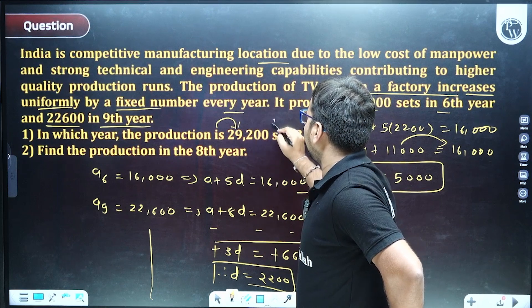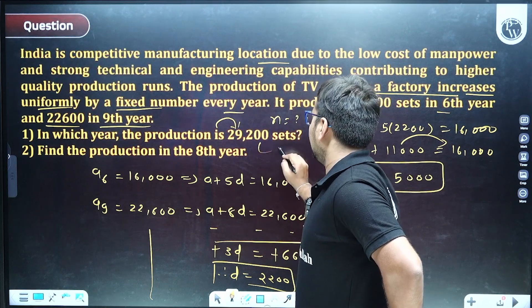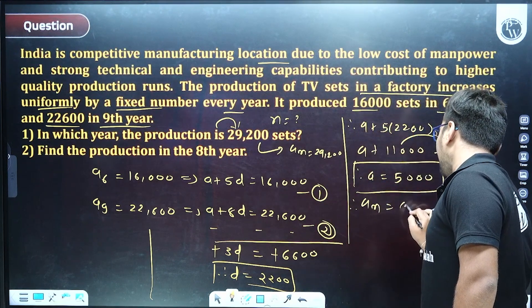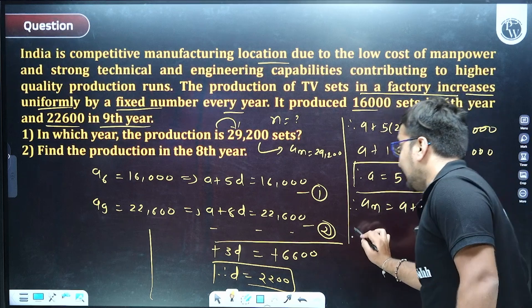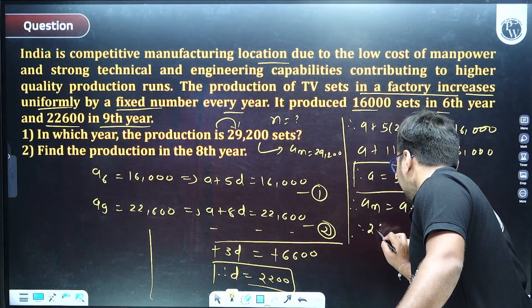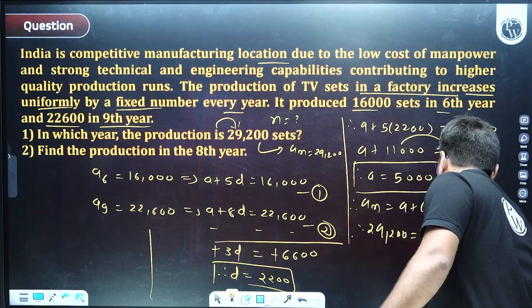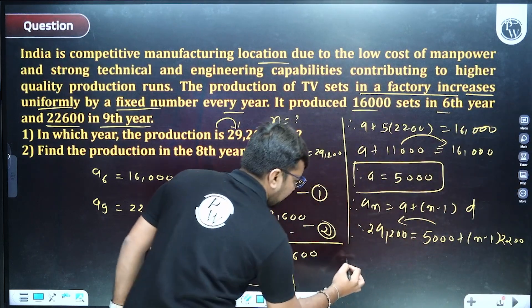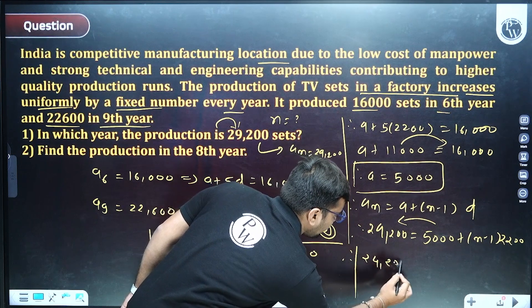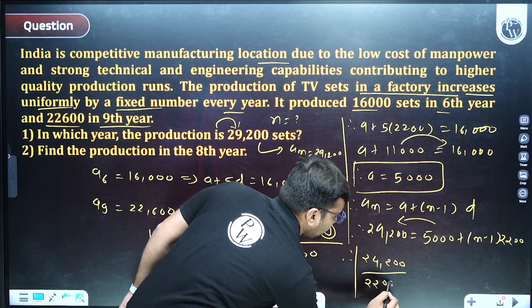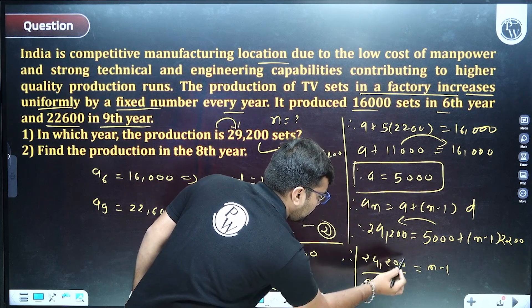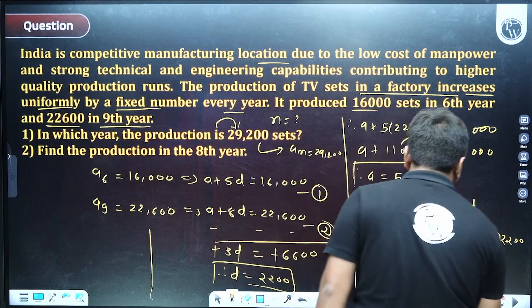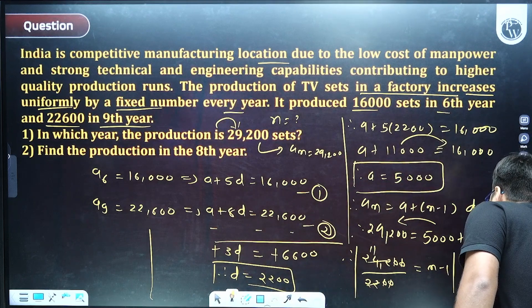Given an = 29,200, using the formula: a + (n−1)d = 29,200, substitute a = 5,000 and d = 2,200: 5,000 + (n−1) × 2,200 = 29,200. Subtracting: (n−1) × 2,200 = 24,200, so n−1 = 11, giving n = 12. Therefore, in the twelfth year, TV set production will reach 29,200.